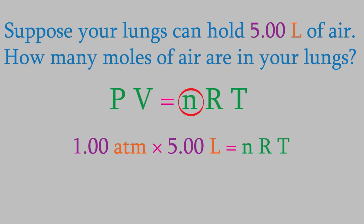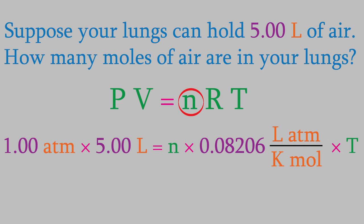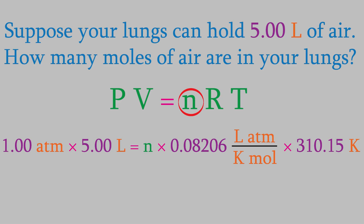V is 5.00 liters, and R is 0.08206 liters atmospheres per kelvin mole. What about the temperature? Well, if you hold the air in your lungs for a little while, it'll be at your body temperature, which is about 98.6 degrees Fahrenheit or 37.0 Celsius. We'll convert that into kelvin, which is 310.15 kelvin. When we solve the equation, we find that N is equal to 0.196 moles of air.